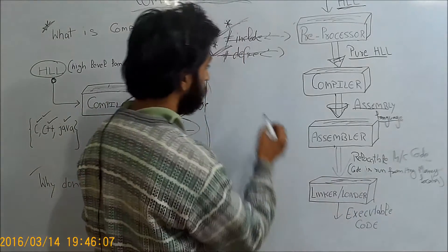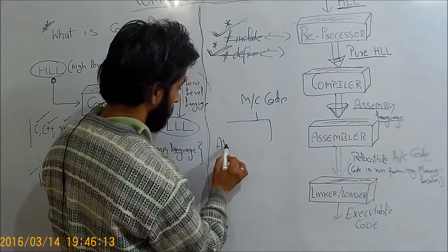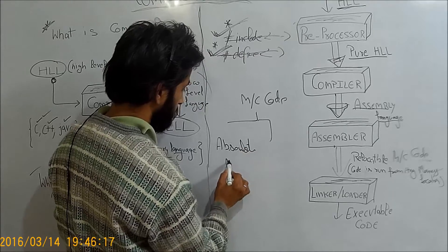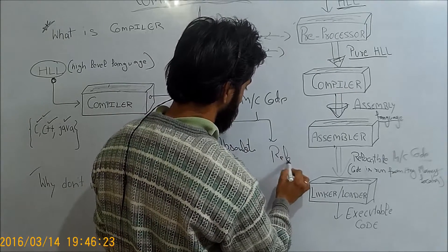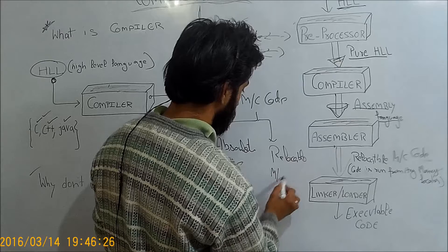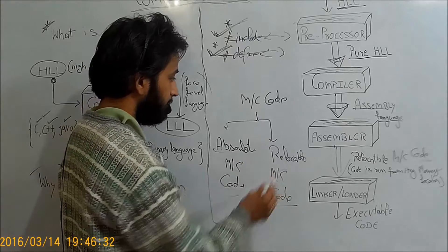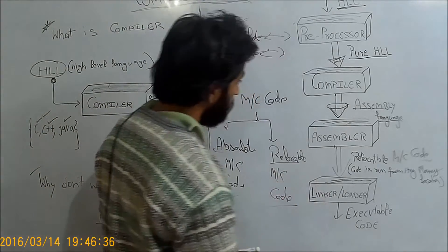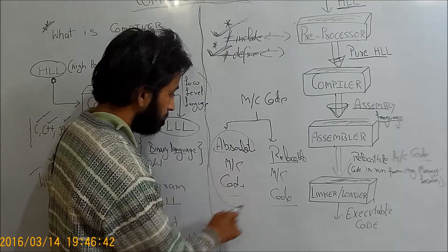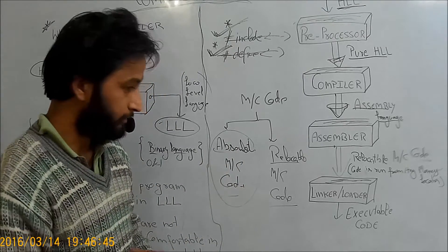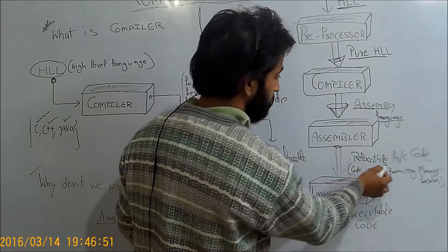Generally, an assembler generates two types of machine code. The first is absolute machine code and the second is relocatable machine code. Relocatable machine code is code that can be run from any memory location, whereas absolute machine code is code that can be run only from an exact memory location. Generally, the assembler gives us relocatable machine code.